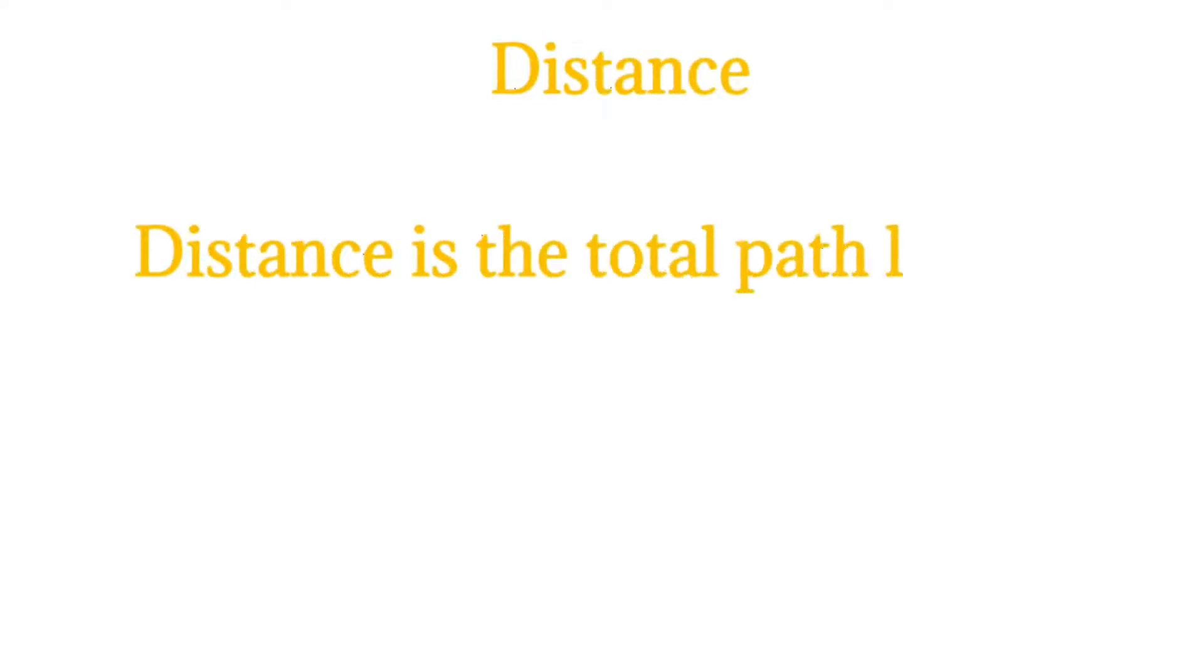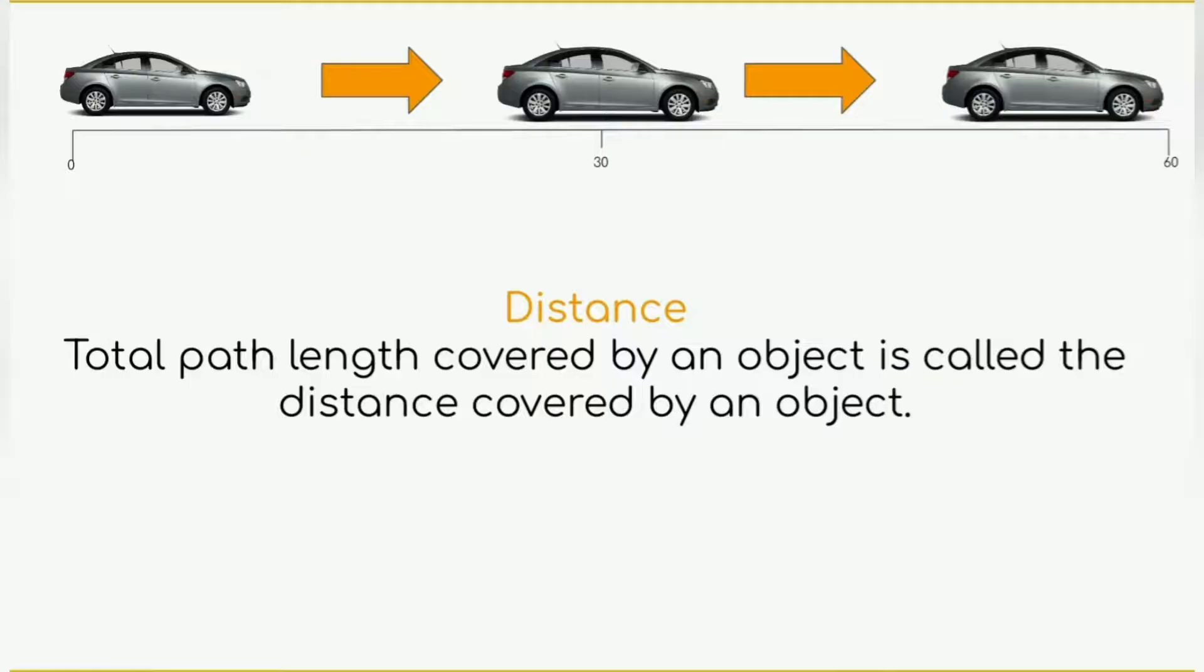Distance: Distance is the total path length covered by an object. For instance, see this car travels from 0 to 60 km in 1 hour, and consider the fact that this car comes back to 30. What is the total path length covered by the object? The total path length covered is 90 km.